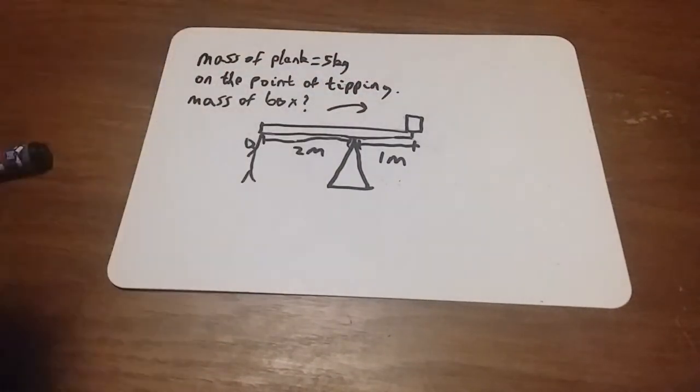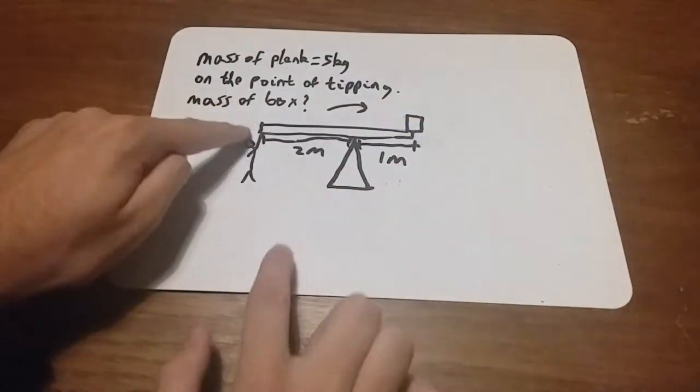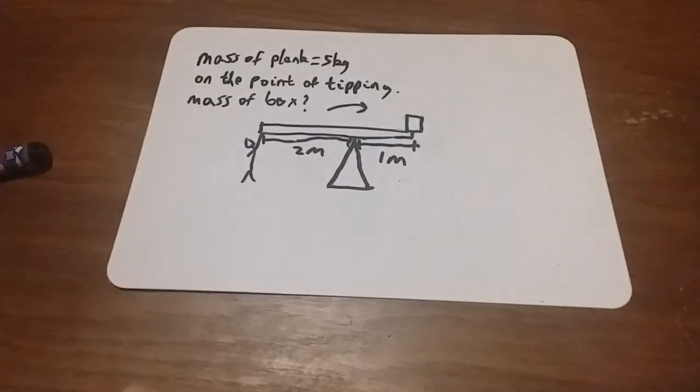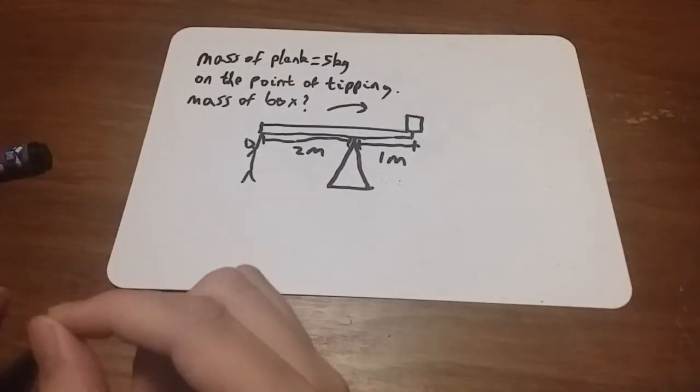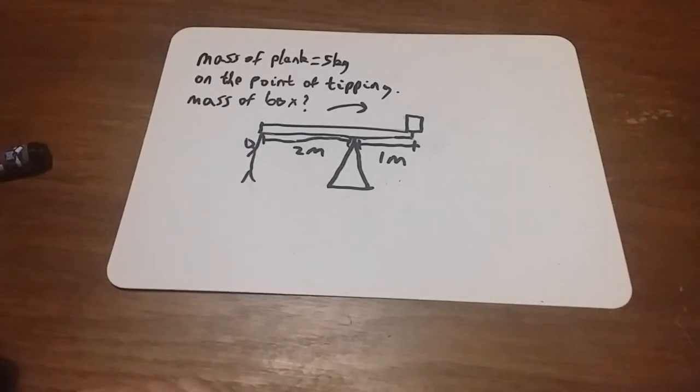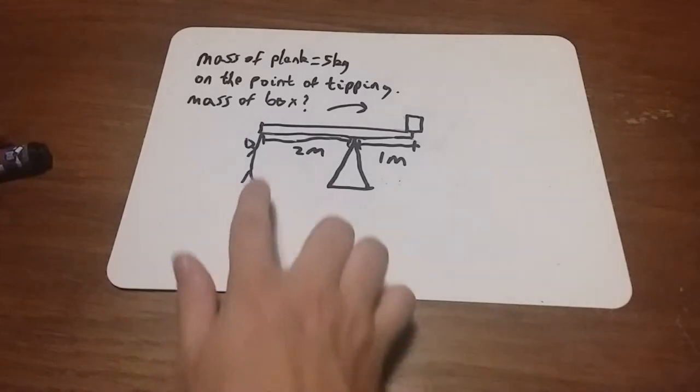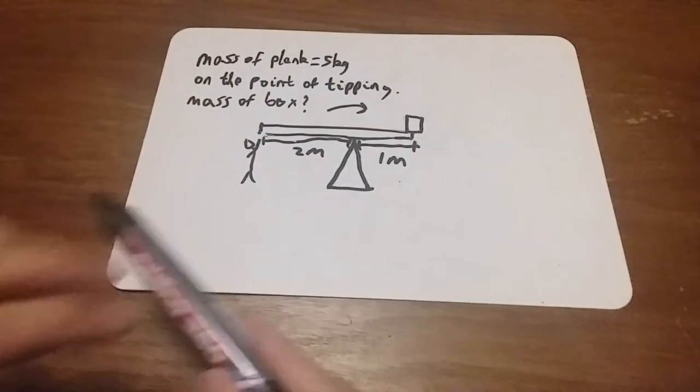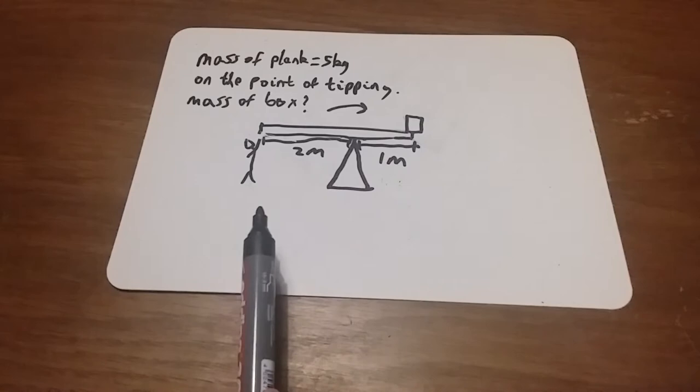Imagine we increase this mass here, then the whole thing would tip and this person would no longer be supporting up, so we can treat the force as zero. That's going to be the case with all the questions we do today. This person doesn't really matter. If they were not holding it up at all, it would still be just in balance here.